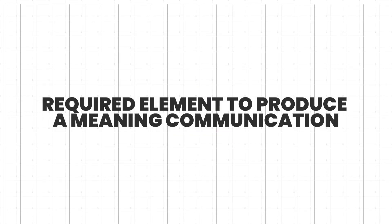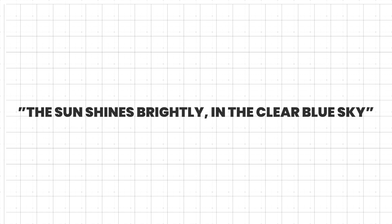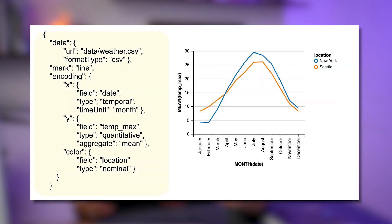In Vega-Lite, there are required elements to produce a meaningful communication, like in English sentences, which must include a subject, verb, and punctuation at a minimum. Also, like written language, in Vega-Lite you can add a limitless amount of additional specifications to simple communications. By adding these, you can make your visualizations more complex or more specific, change the tone or feeling of the visualization, or respond to audiences, among many other options.